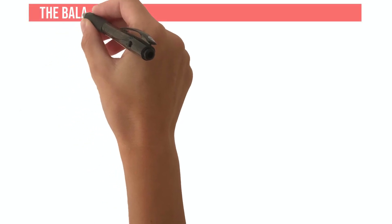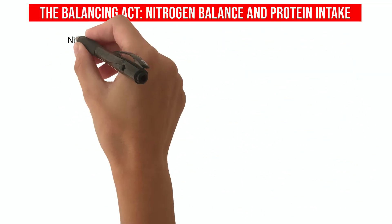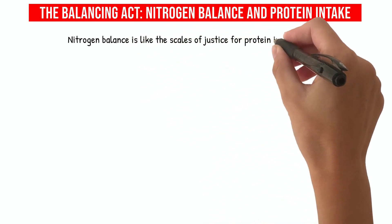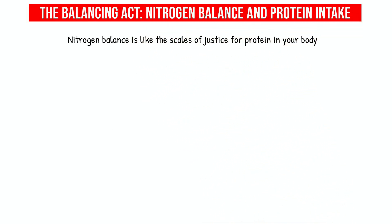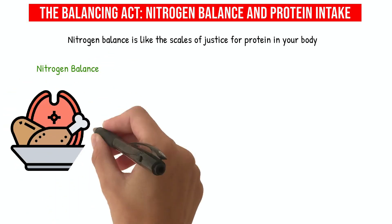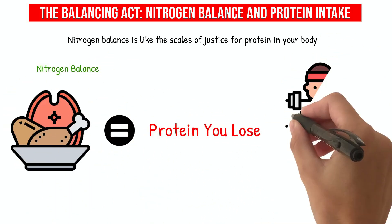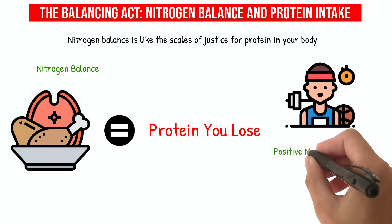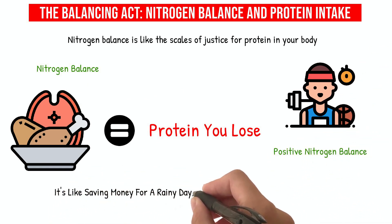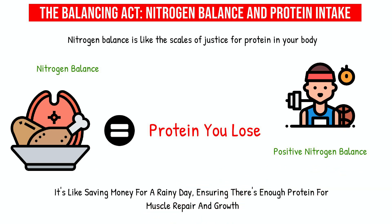The balancing act: nitrogen balance and protein intake. Nitrogen balance is like the scales of justice for protein in your body. When you're in nitrogen balance, the protein you eat equals the protein you lose. Athletes often aim for a positive nitrogen balance — like saving money for a rainy day — ensuring there's enough protein for muscle repair and growth.